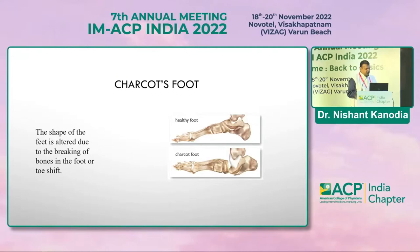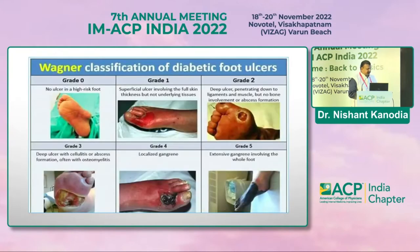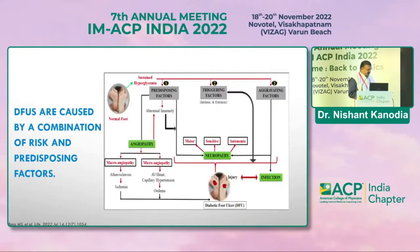Charcot foot is a condition where the shape of the foot is altered due to breaking of bones inside the foot or shifting of the toe. The Wagner classification for diabetic foot ulcers grades severity: Grade 0 has no ulcers; Grade 1 involves superficial skin only; Grade 2 is deep ulcer; Grade 3 is deep ulcer with cellulitis or abscess; Grade 4 is localized gangrene; and Grade 5 is extensive gangrene involving the whole foot.